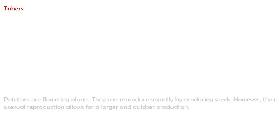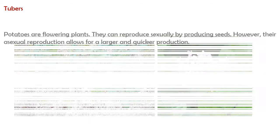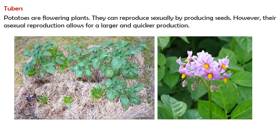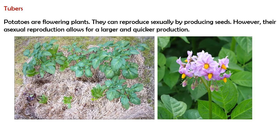A tuber is a thickened underground part of a stem that is modified for storage of food. Potatoes are flowering plants. They can reproduce sexually by producing seeds. However, their asexual reproduction allows for a larger and quicker production.